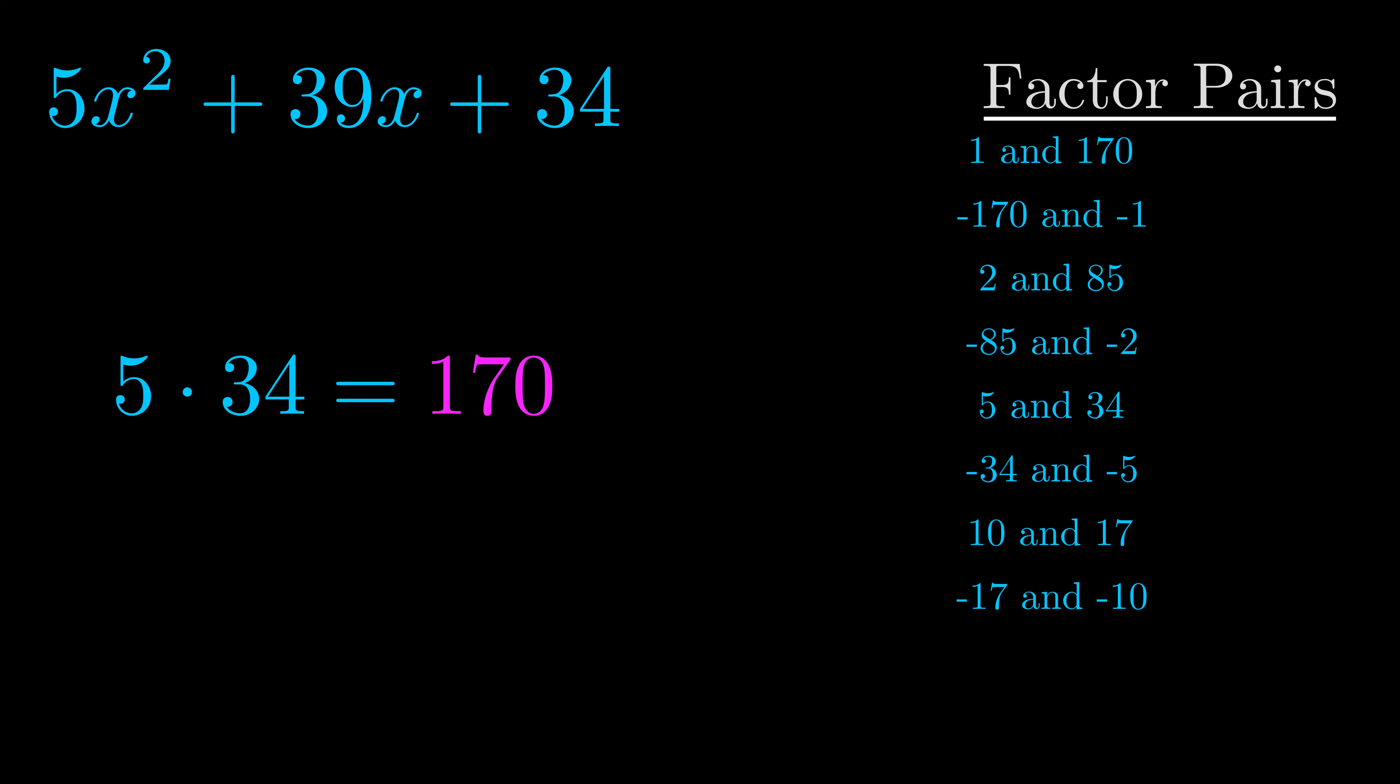The b value is the coefficient on the x term. That's the middle term, the one that we haven't done anything with yet. And really this is the only factor pair that we need.